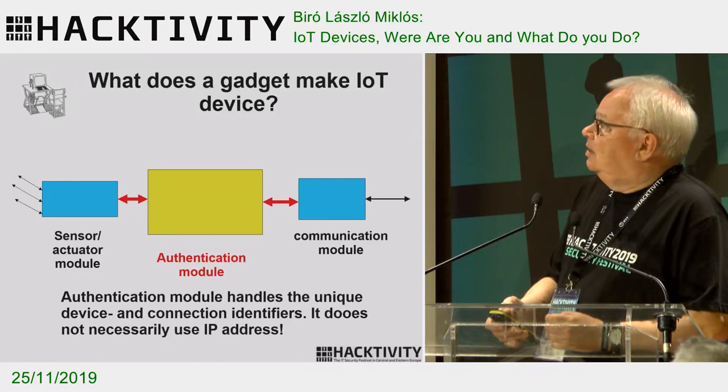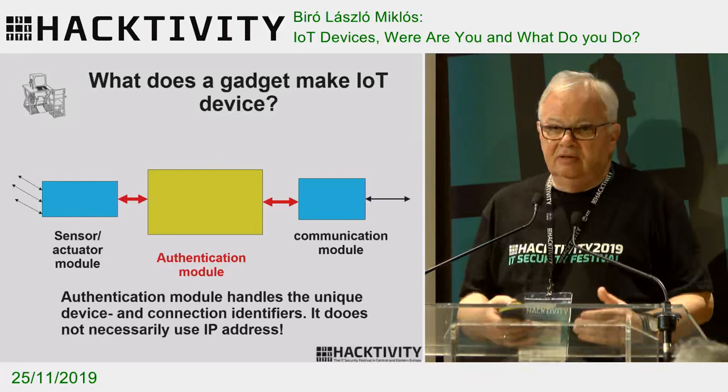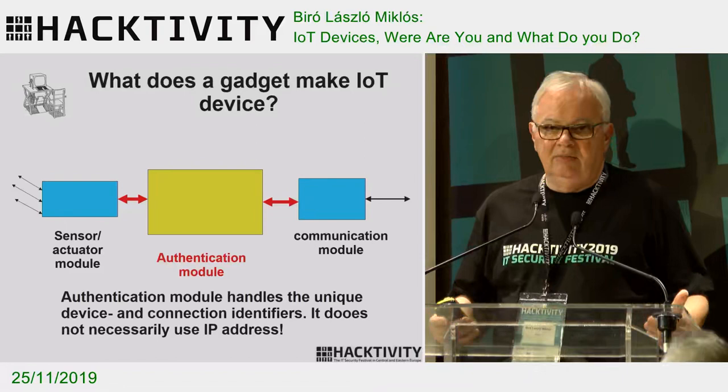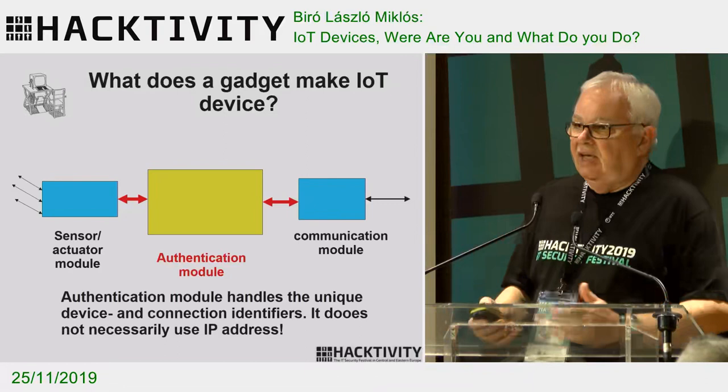It can be any unique identifier. For example, in mobile phone systems, the IMEI number — it's a very long hexadecimal number — is a very strong identifier and it's not an IP address.